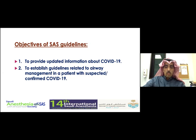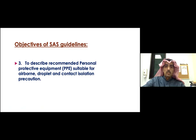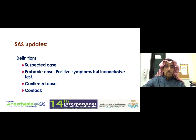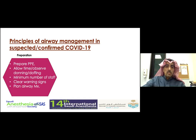The guidelines aimed to help practicing anesthetists with airway management for patients with suspected or confirmed COVID-19, and described recommended personal protective equipment suitable for airborne, droplet, and contact isolation. They defined suspected, probable, confirmed cases and contacts according to available evidence, with principles focusing on preparation — including how to prepare PPE and the time needed for the donning and doffing process.